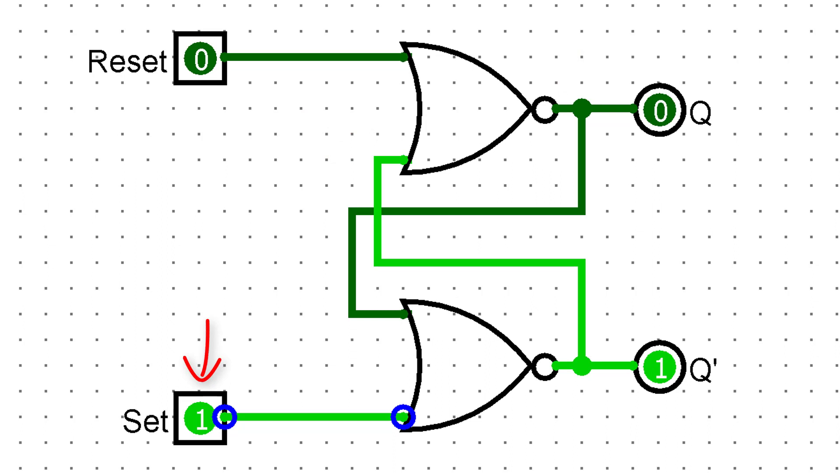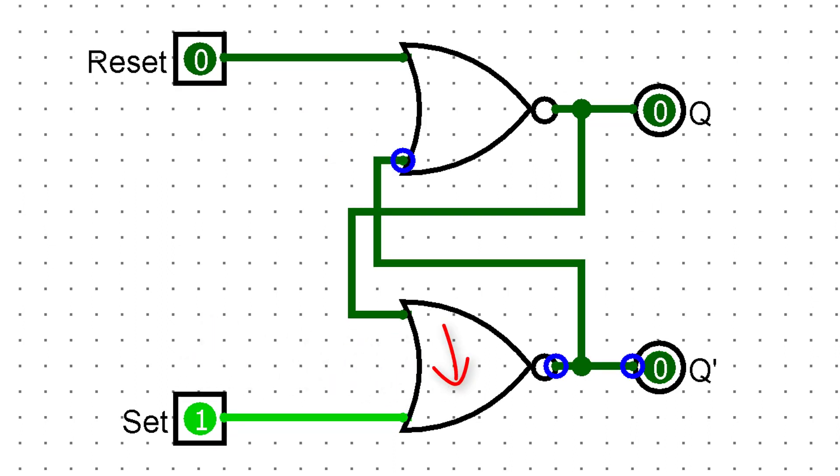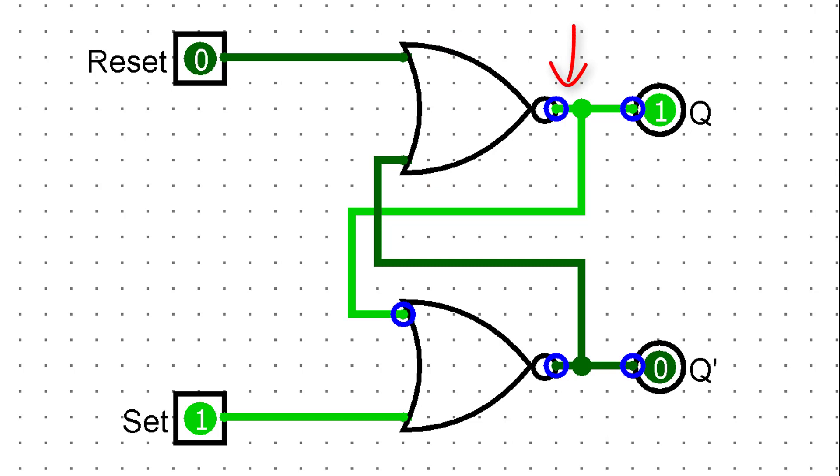So when we switch on the set signal, the corresponding NOR gate has a high input. So its output switches off. Both inputs to the second NOR gate are now off. So its output switches on.